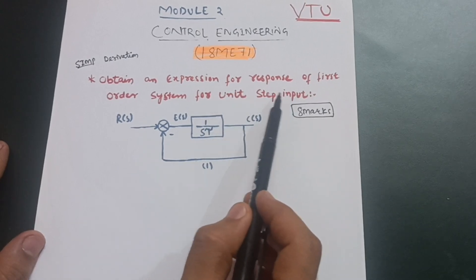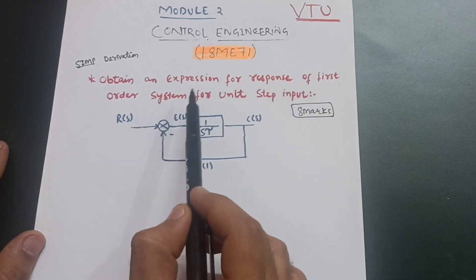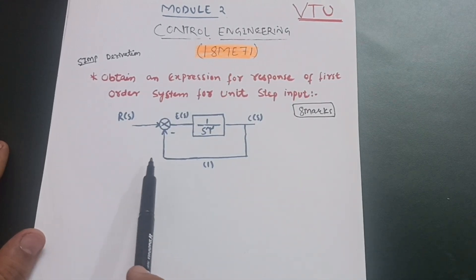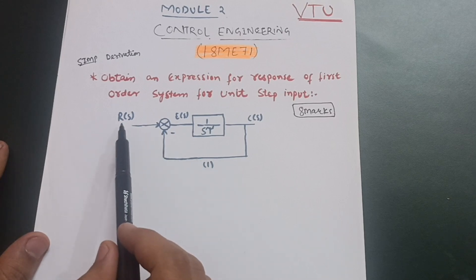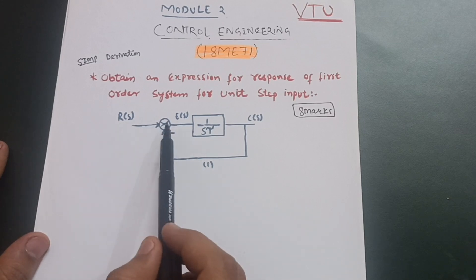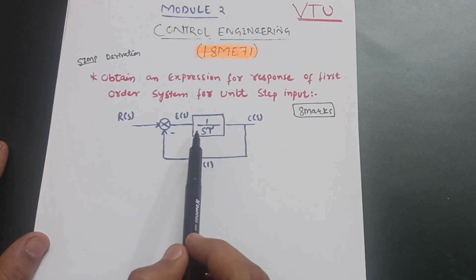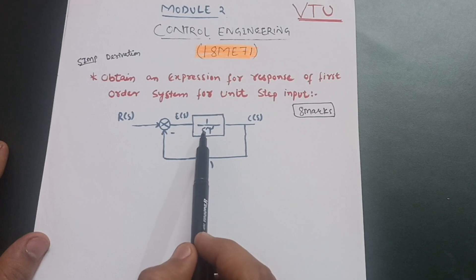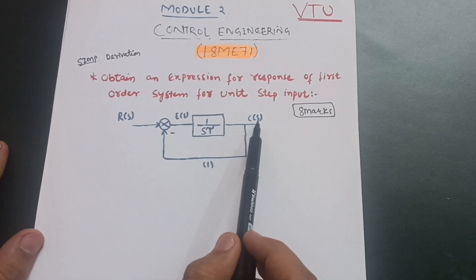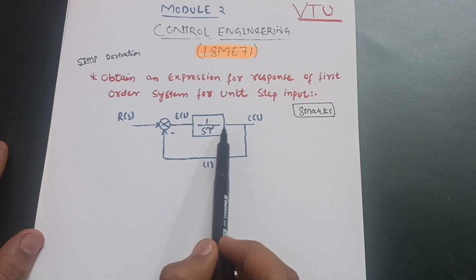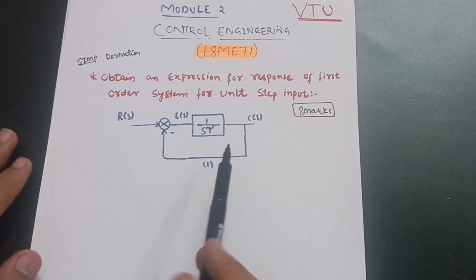We need to obtain an expression for the response of a first order system for unit step input. Looking at the block diagram: R(S) is the input, followed by a summing point producing the error signal, then the forward path G(S), and C(S) is the output of the closed loop system. The feedback path is unity, that is 1.